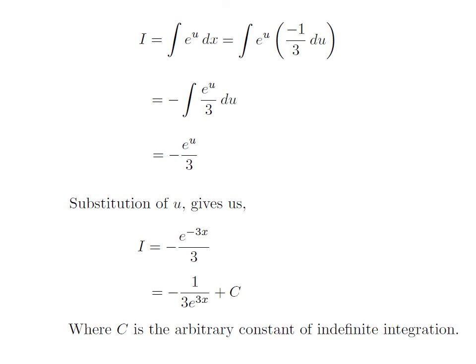Shifting the exponential of minus 3x to the denominator, the exponent of e became 3x. So the integral of 1 divided by e to the power 3x with respect to x is equal to minus 1 divided by 3 into e to the power 3x, plus capital C, which is the arbitrary constant of indefinite integral. Do not forget to add this constant at the end of any indefinite integration.